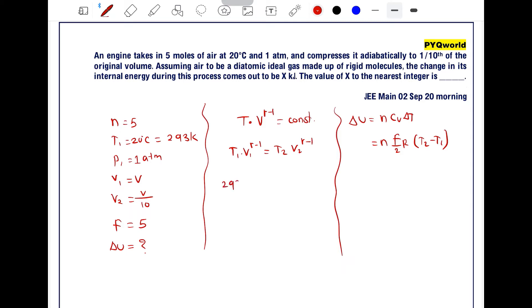T1 equals 293, V1 is V. What is gamma? Gamma equals (F+2)/F = (5+2)/5 = 7/5. Therefore, gamma minus 1 equals 7/5 - 1 = 2/5.